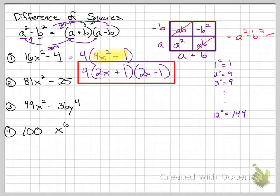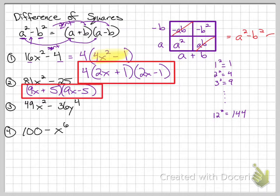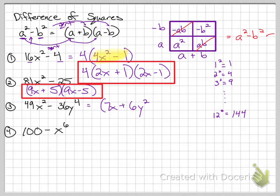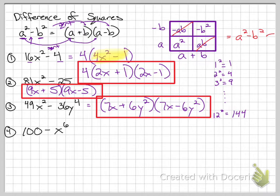For number 2, 81 and 25 have no common factor. They're both perfect squares and it's minus, so it's difference of squares. The square root of 81x² is 9x, and the square root of 25 is 5, giving (9x + 5)(9x − 5). For number 3, 49 and 36 have no common factors. The square root of 49x² is 7x, and the square root of 36y⁴ is 6y² — when you square root an exponent, you divide it by 2 — giving (7x + 6y²)(7x − 6y²).